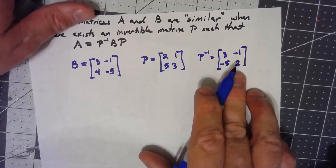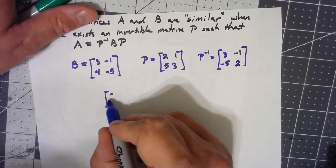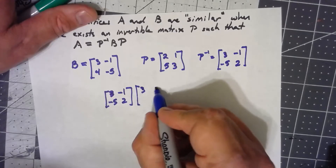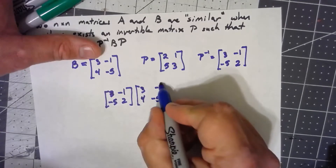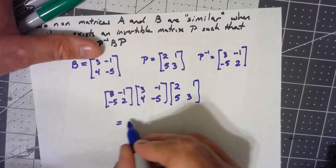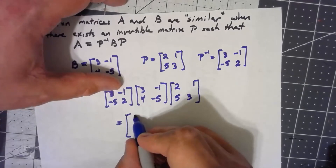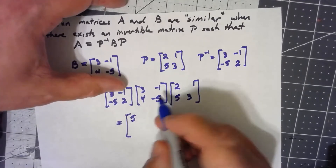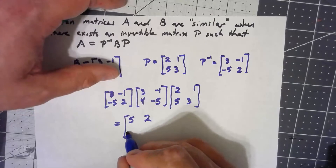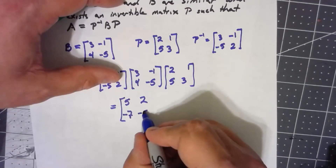So if I take P inverse times B times P, I multiply left to right. Taking the first two matrices: 9 minus 4 is 5; negative 3 plus 5 is 2; negative 15 plus 8 is negative 7; and 5 minus 10 is negative 5.